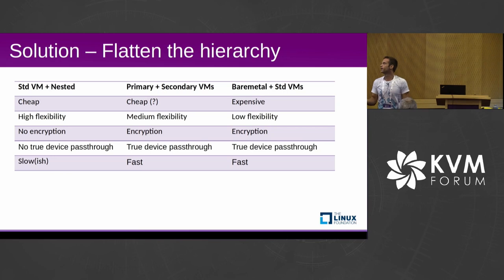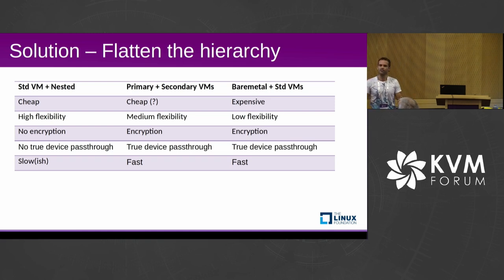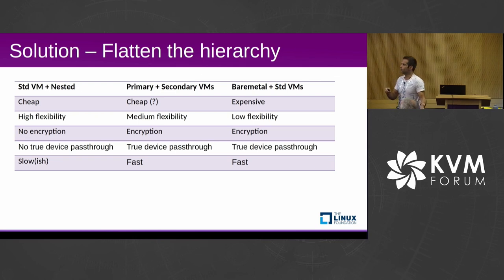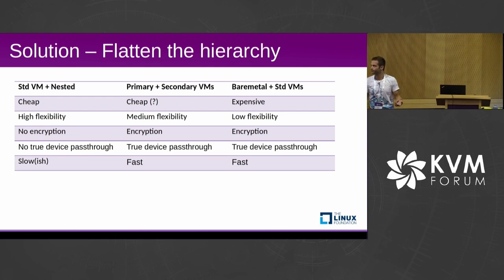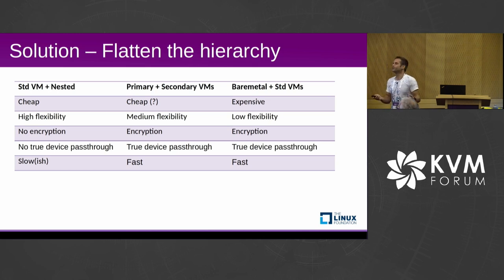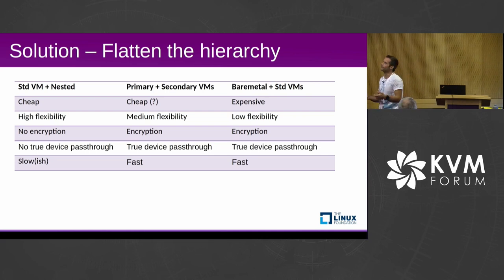This is a comparison table between current solutions — standard plus nested, and bare metal plus standard. Our approach should be as cheap as standard VM because for a cloud provider it doesn't change much. There is some flexibility trade-off: storage is divided between the secondary drive and primary drive, and there are some memory constraints — but you still have much more choice than bare metal. You also have the full hardware feature set available for secondary VMs: encryption, device pass-through. Secondary VMs are as fast as standard VMs because they are standard VMs.